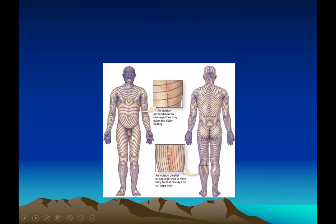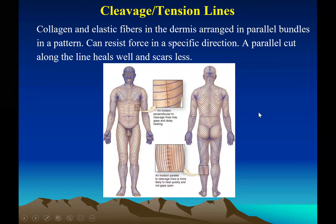This is a picture of cleavage lines. The collagen and elastic fibers follow a pattern in different parts of the body — in the thoracic region they run east-west, and at an angle in the abdominal region. These tension lines are formed by collagen and elastic fibers arranged in parallel bundles. Surgeons need to know this because if you make a cut along the grain it heals faster with less scarring, whereas cutting across the grain takes longer to heal and the incision may not close as well.